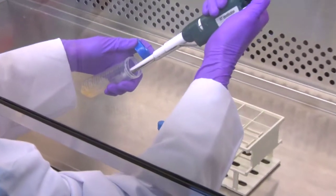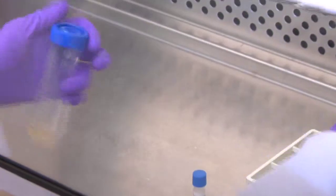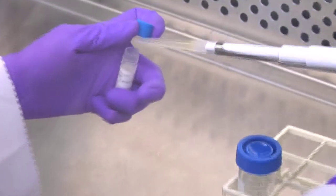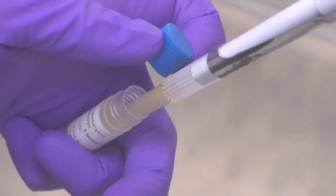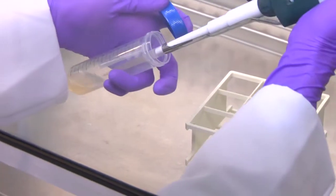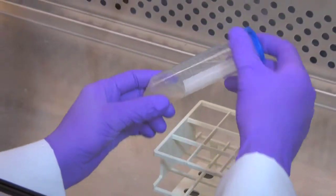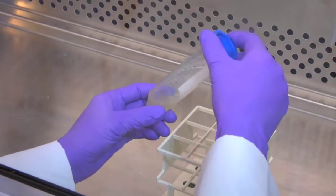Pipette one milliliter of medium from the conical tube to wash the cryovial for excess cells. Pour this back into the conical vial. Cap the vial and gently invert three times to mix the cells evenly.